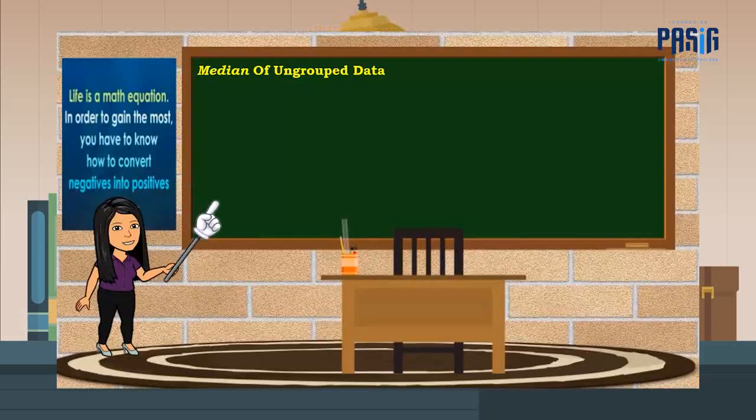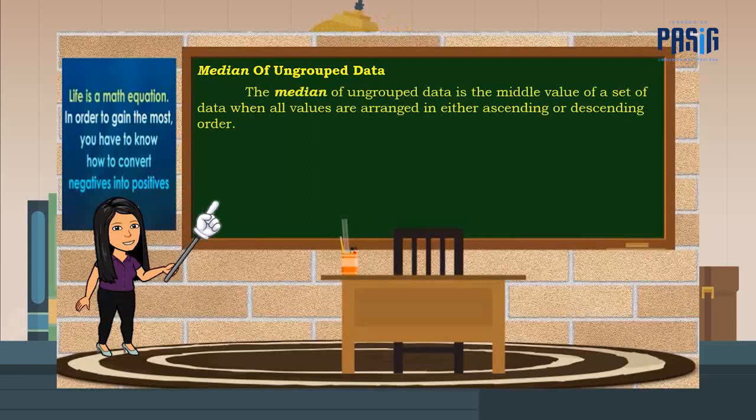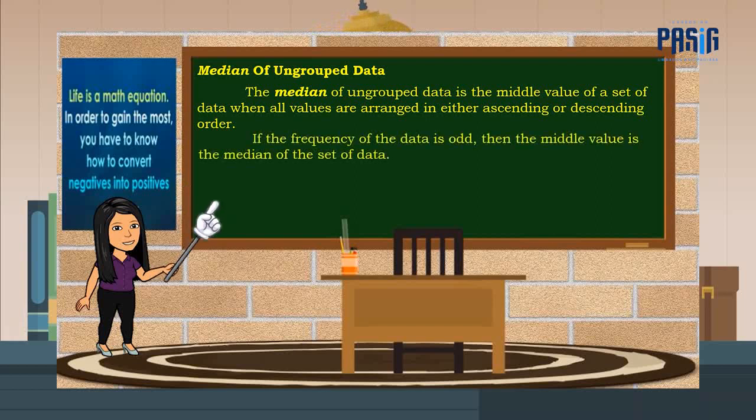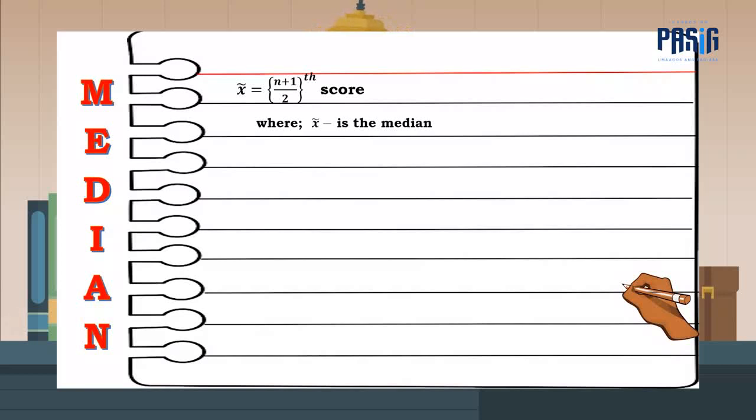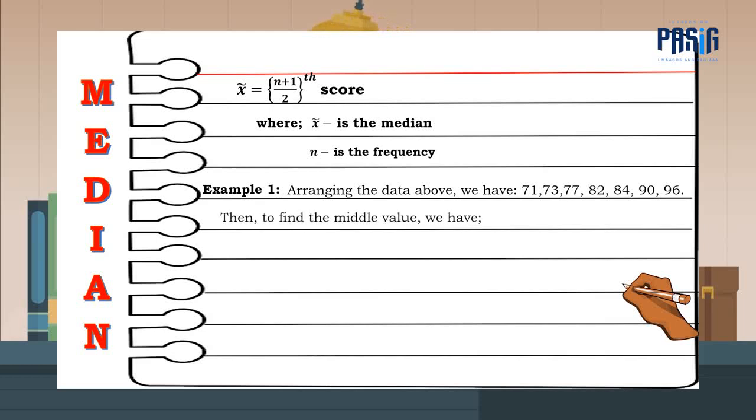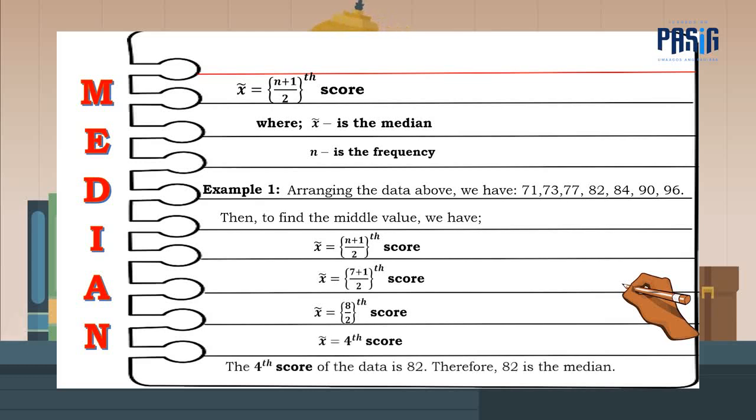Let us now discuss the median of ungrouped data. The median of ungrouped data is the middle value of a set of data when all values are arranged in either ascending or descending order. If the frequency of the data is odd, then the middle value is the median of the set of data. If it is even, the median of the data is the mean of the two middle values. This formula can be used to identify the position of the median of a given set of ungrouped data. For example, arranging in ascending order of the same data from the COVID-19 cases from March 21 to 27, 2020, we have. Then, to find the middle value, we use the formula. The fourth score of the data is 82. Therefore, 82 is the median.